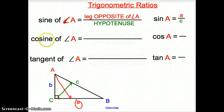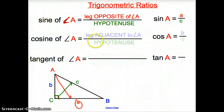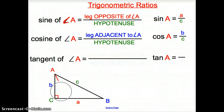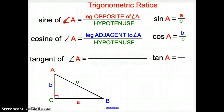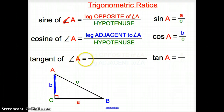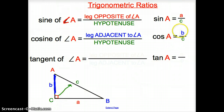Next we have cosine of angle A. Cosine of angle A is the leg adjacent to A over the hypotenuse. Adjacent means right next to A where it connects, so it's going to be B over C — cosine of A equals B over C.